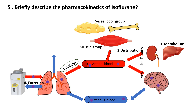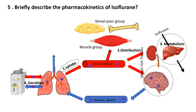Upon entering circulation, isoflurane quickly distributes to highly perfused organs like the brain and heart before gradually reaching muscles and slowly saturating adipose tissue due to its high lipid solubility. The anesthetic undergoes minimal hepatic metabolism primarily via CYP2E1, producing negligible amounts of trifluoroacetic acid. Over 95% of isoflurane is eliminated unchanged through exhalation.